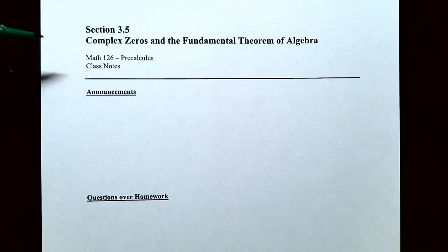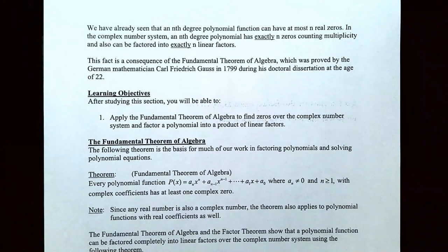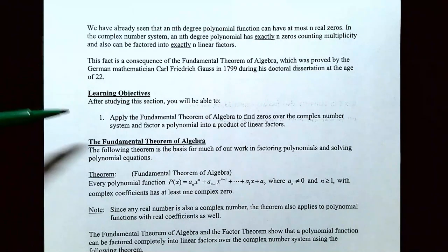Hey everyone, it's Professor Permanent, and in this video we're going to talk about complex zeros and the fundamental theorem of algebra. We've already seen that an nth degree polynomial function will have at most n real zeros. However, in the complex number system, an nth degree polynomial will have exactly n zeros if you count their multiplicity, and also can be factored exactly into n linear factors. In this video we're going to focus on applying the fundamental theorem of algebra to find the zeros over the complex number system and also to factor a polynomial into a product of linear factors.